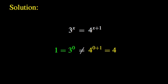It is obvious that 0 cannot be a solution, because 3 to the power 0 is 1, and 4 to the power 1 is 4, and 1 is different from 4. There are also no negative integer solutions to the equation 3 to the power x equal to 4 to the power of the quantity x plus 1, because an odd integer cannot equal an even integer.